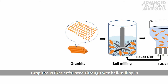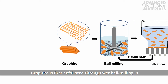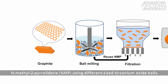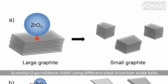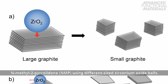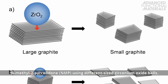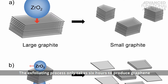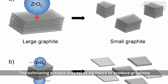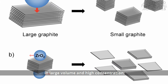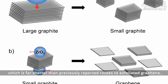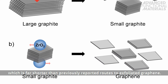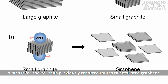Graphite is first exfoliated through wet ball milling in N-methyl-2-pyrolidine, or NMP, using different sized zirconium oxide balls. The exfoliating process only takes six hours to produce graphene in large volume and high concentration, which is far shorter than previously reported routes to exfoliated graphene.